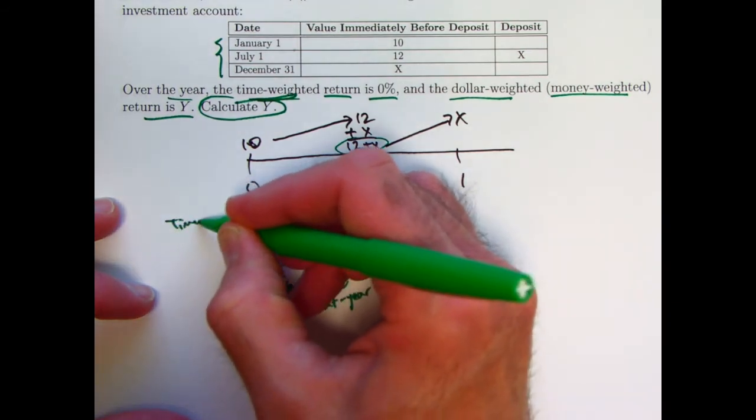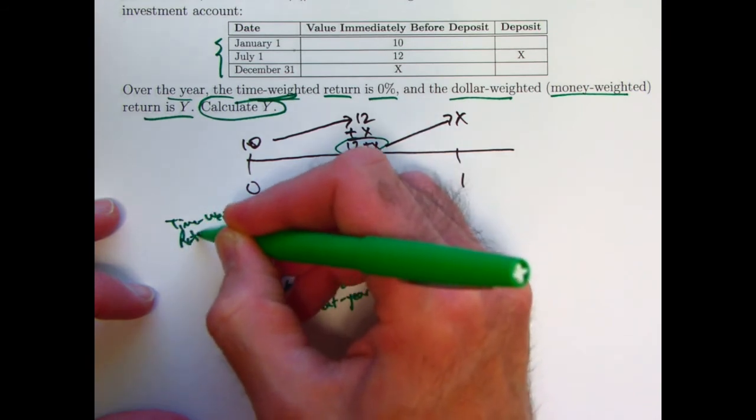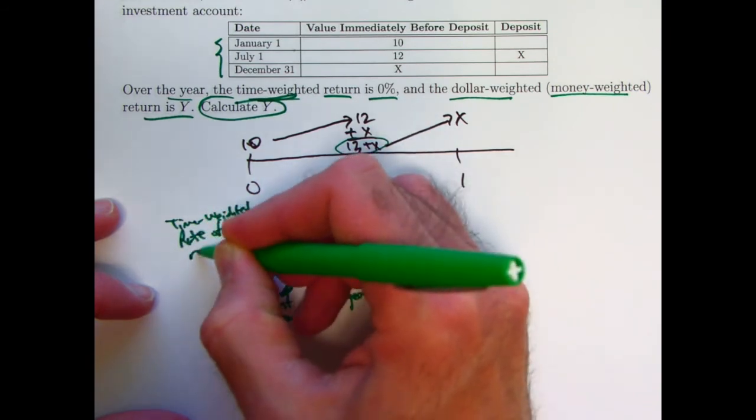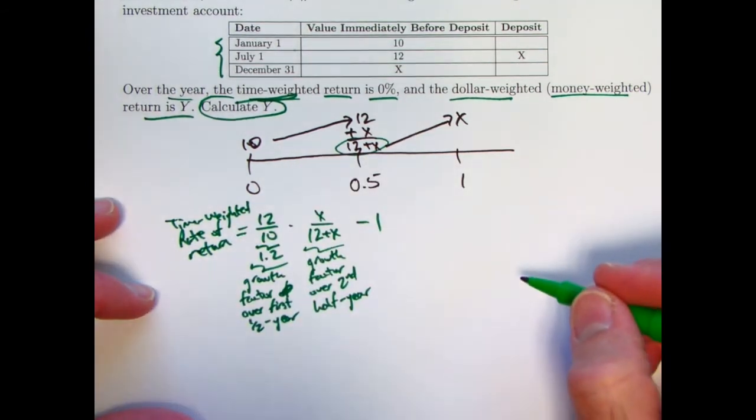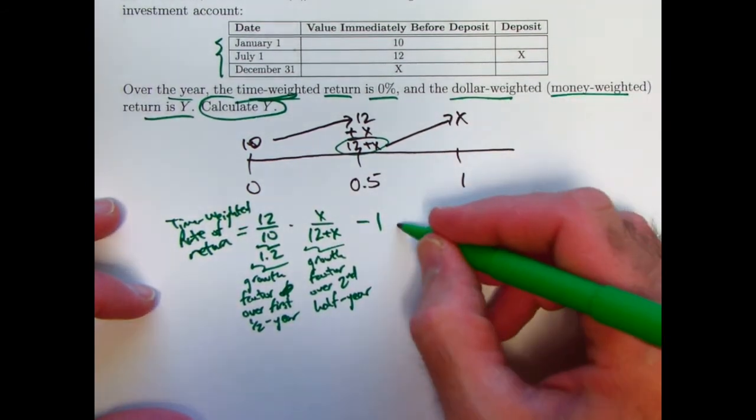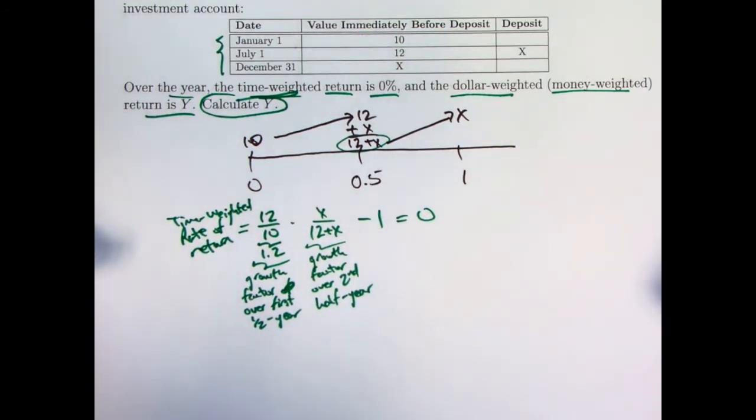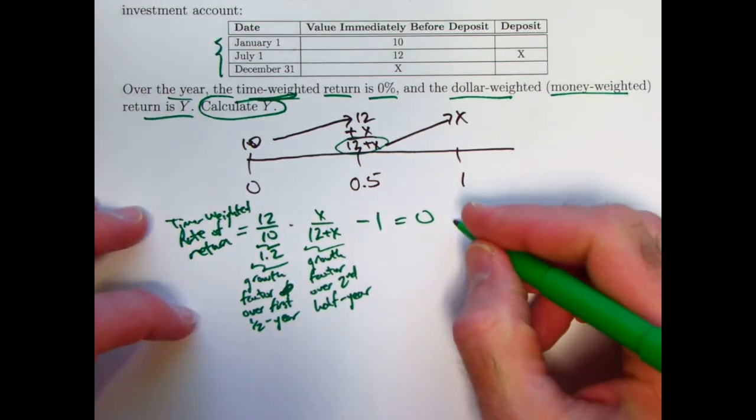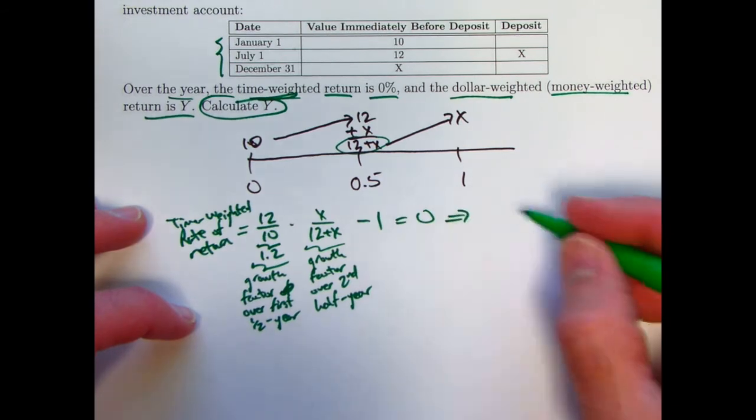Time-weighted rate of return is the product of all the growth factors minus 1. And that's given to be 0. So I set this equal to 0. That's going to allow me to solve for x. And once I have x, then I can figure out the dollar-weighted rate of return. So it's an equation to solve for x.